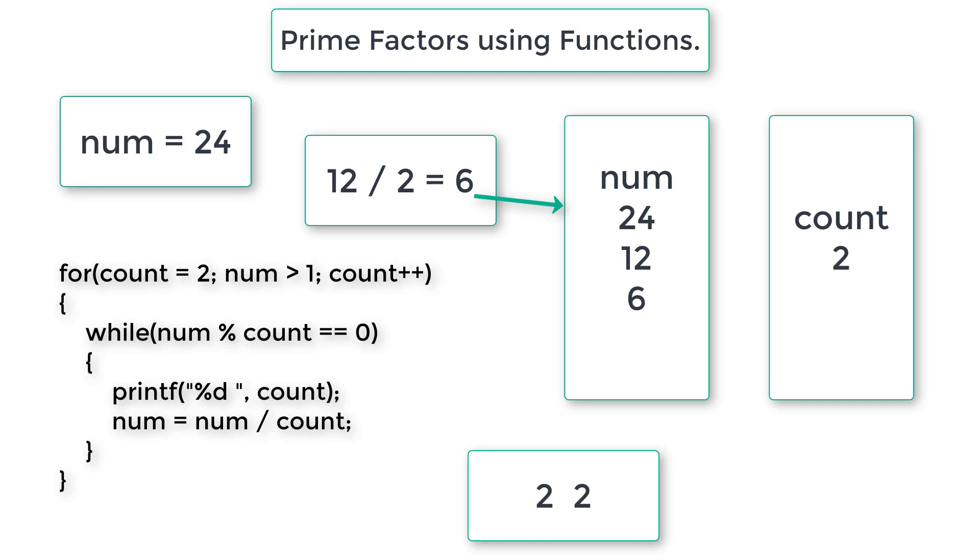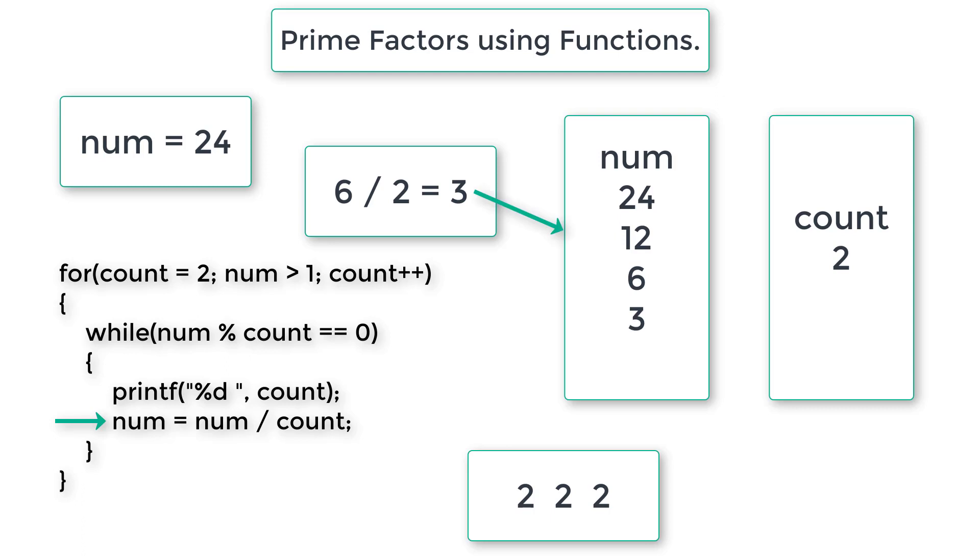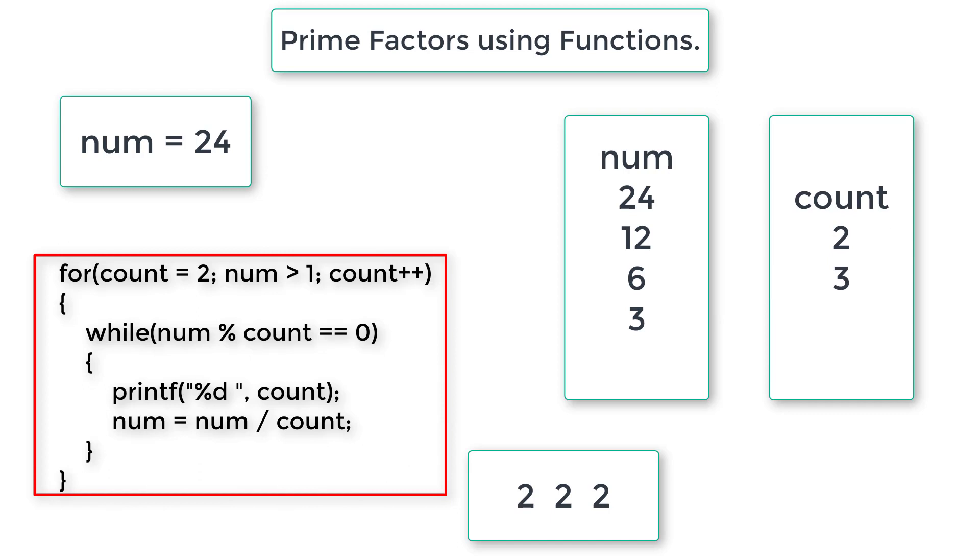Now 6 modulo division 2, yes it is possible, it is perfectly divisible by 2. So print 2. Now num divided by 2, that is 6 divided by 2 is 3. So num is 3 now. 3 modulo division 2 is not equal to 0. So exit while loop, check for loop now. Now increment the count value by 1. So count is 3 now.